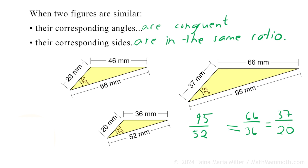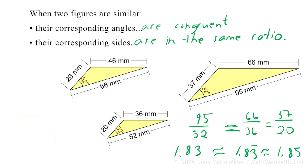Now if you check this with a calculator, I have to tell you that my numbers are a little rounded, they are not exact. So when we check, we're going to get that they are approximately the same ratio. If I take 95 divided by 52, I get about 1.83. Then 66 divided by 36 is 1.833 repeating, and 37 divided by 20 is 1.85. The decimals are only approximately the same because 95, 52, and so on are all rounded. But it is true that the ratios are exactly equal if we are using exact numbers.